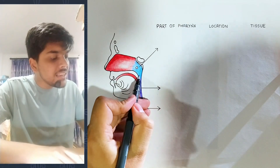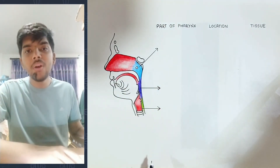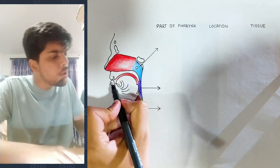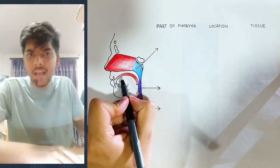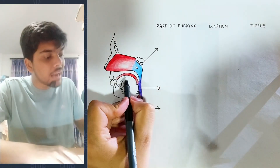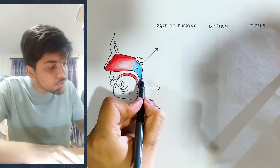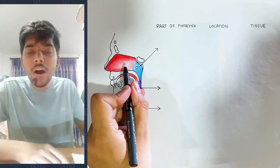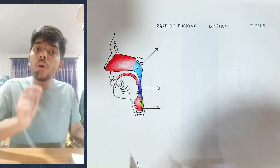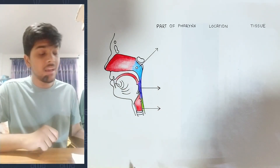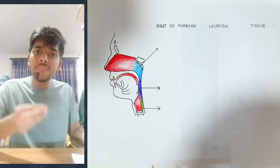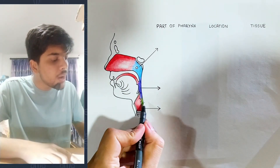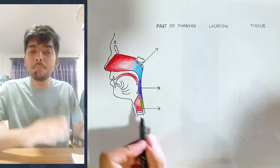The pharynx is a common path for food and air. Since the pharynx serves as a common path, it will carry both food and air. So the pharynx divides into two different pipes.